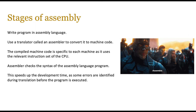Once you have a language, even a low-level language like assembly language, those words like LDD need to be translated into machine code. For that you need a translator called an assembler, to convert the original source code into machine code, or object code. The compiled machine code is specific to each machine as it uses the relevant instruction set of the CPU, so an assembly language program created for one particular computer will not always work on another computer unless they're of the same type. The assembler checks the syntax of the assembly language program and ensures that everything is translated one-to-one in the correct machine code, helping to speed up development time as some errors are identified during translation before the program is executed.